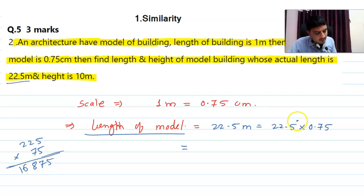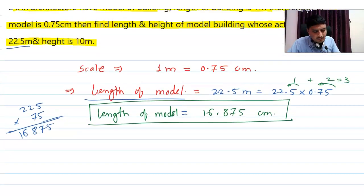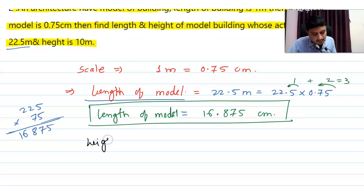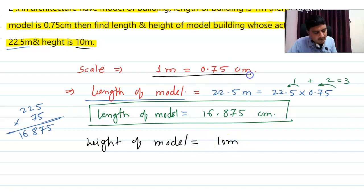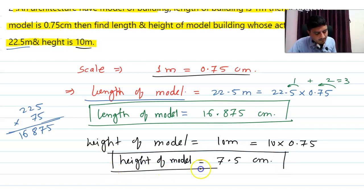Multiplying both sides of the scale by 22.5: the model length = 22.5 × 0.75 = 16.875 cm. Multiplying both sides by 10: the model height = 10 × 0.75 = 7.5 cm. Therefore, the length of the model is 16.875 cm and the height of the model is 7.5 cm.